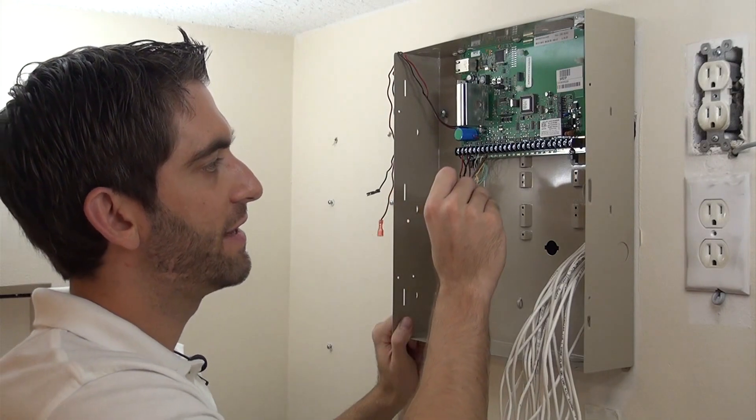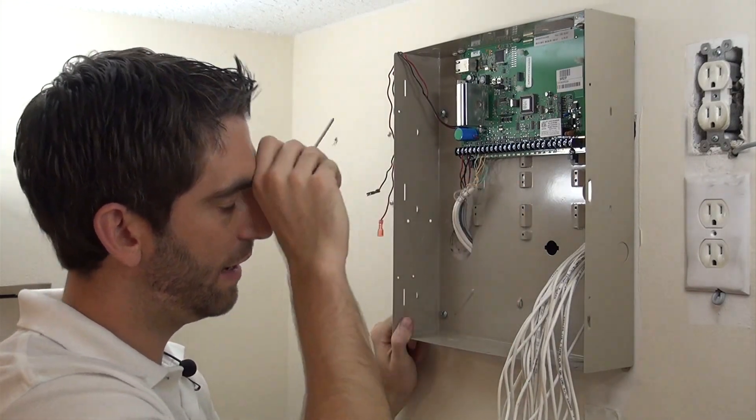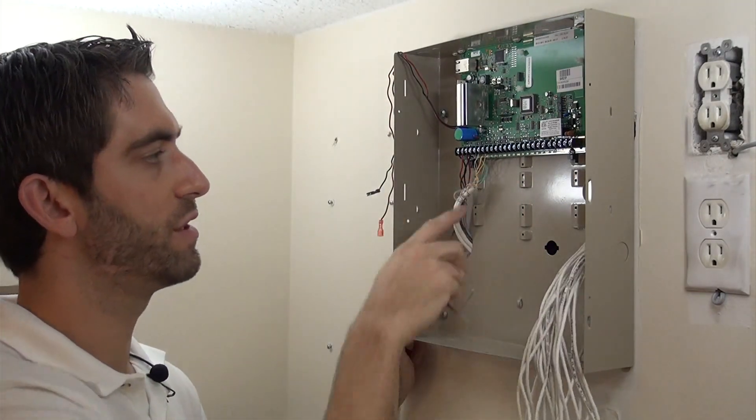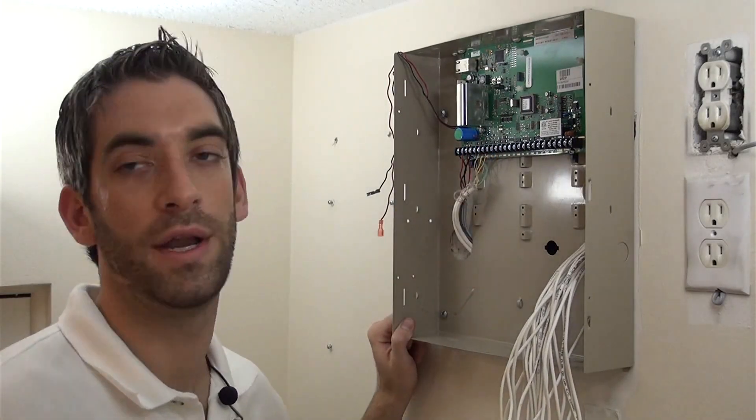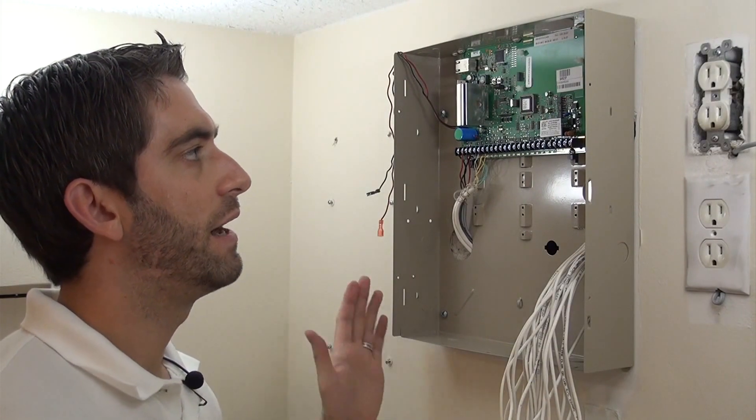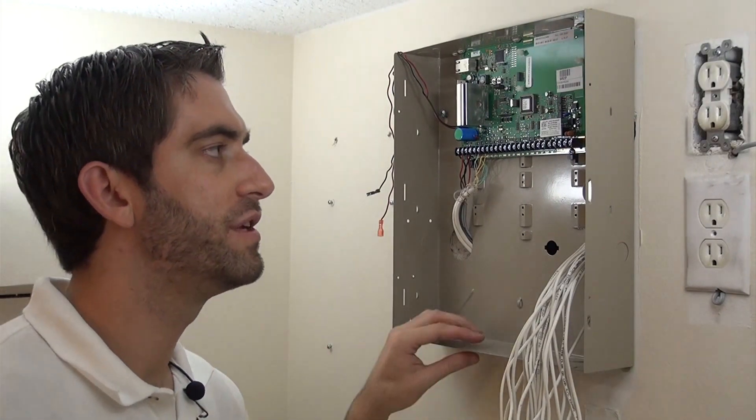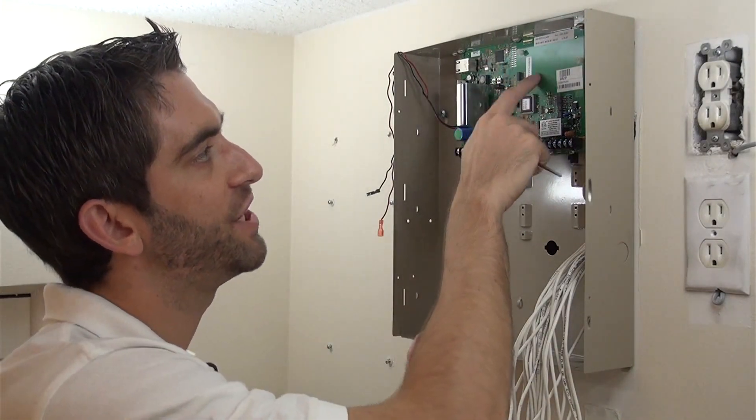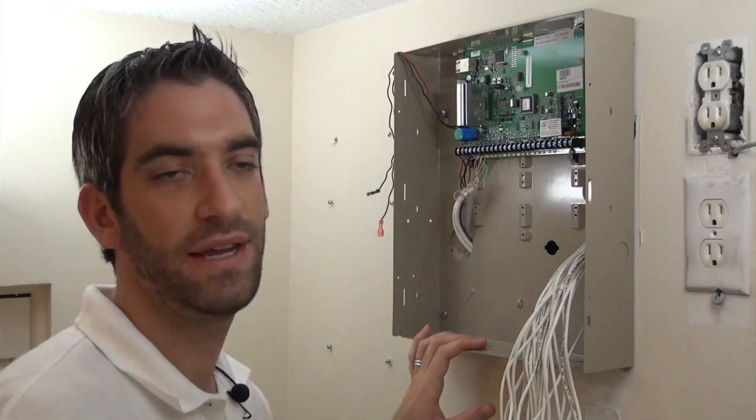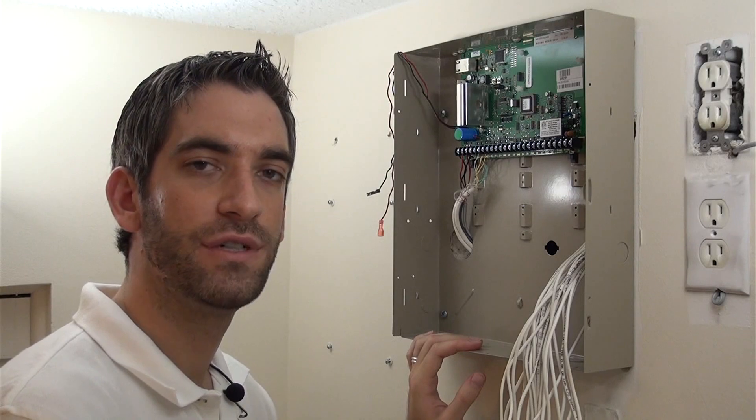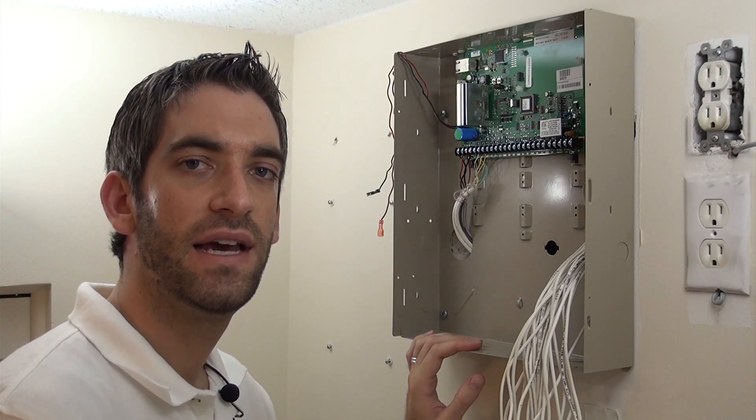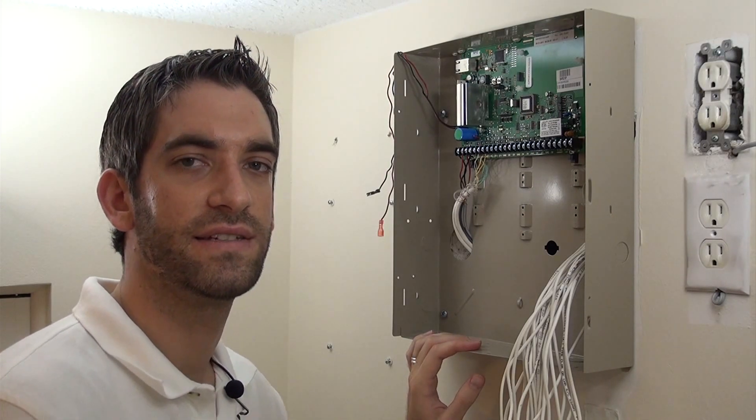Once we have it connected, we'll have everything landed and we'll have two of these individual zones landed on two, three, four, five, six, seven, eight. We'll have a single zone on zone one. We'll have everything wired up at that point. We can go deal with our keypads, add in our GSM card, which gets snapped in here, throw on power, and then we'll move over to start addressing the keypads and finalizing the installation.